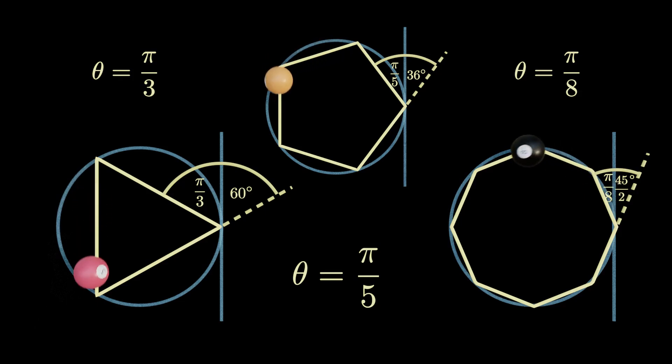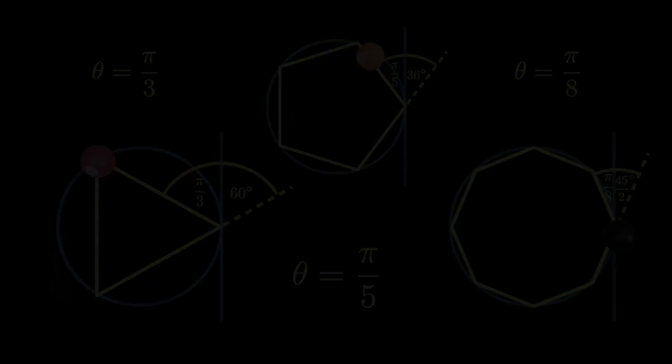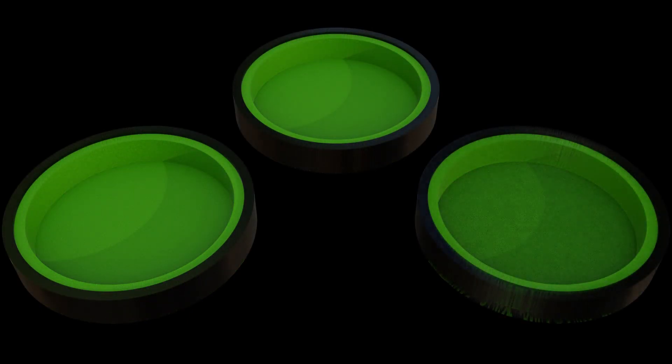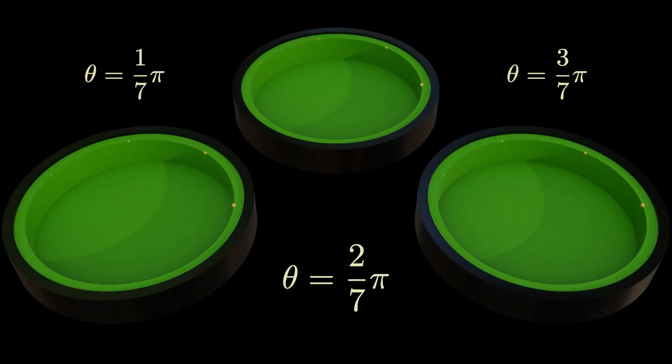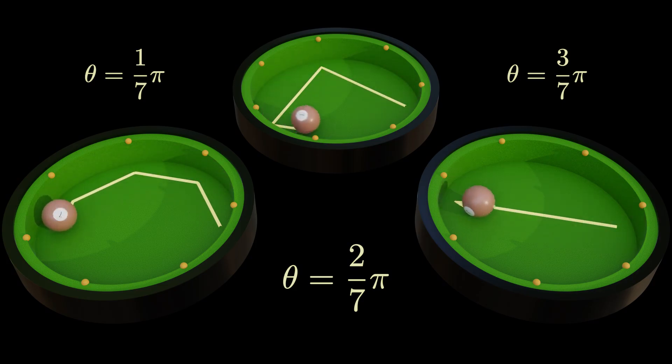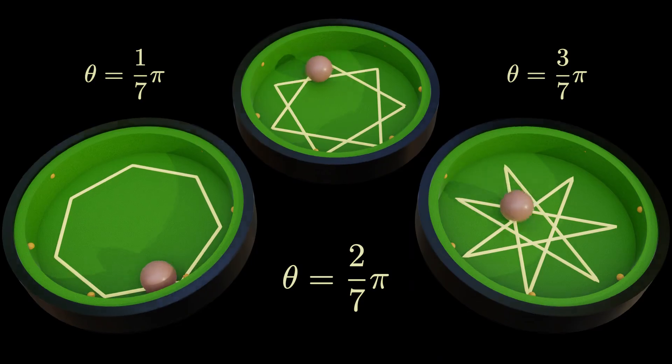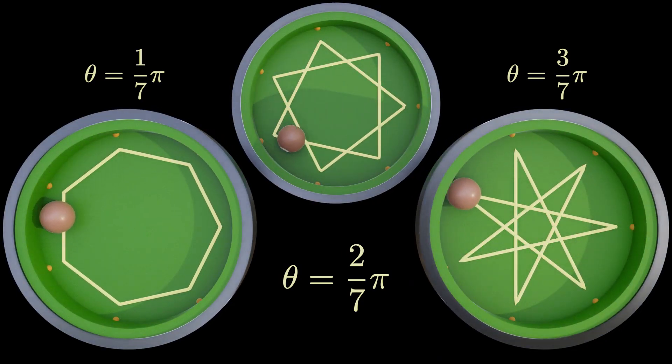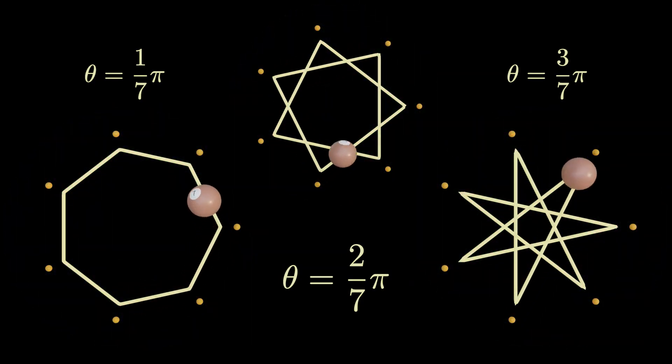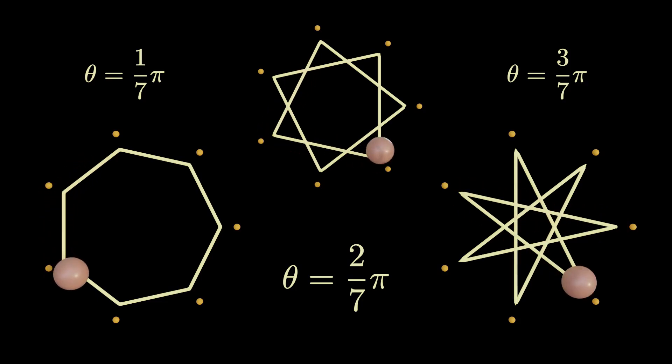So far, the numerator in the rational multiple was equal to 1. When the numerator is different from 1, the billiard table still shows the same reflection points, whose number is given by the size of the denominator. But this time, the path does not connect adjacent reflection points, but rather skips a few of them, depending on the value of the numerator.